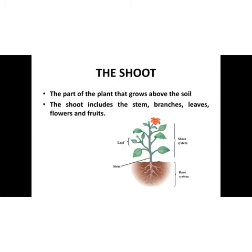Shoot is the part of the plant that grows above the soil. The shoot includes the stem, branches, leaves, flowers and fruits.